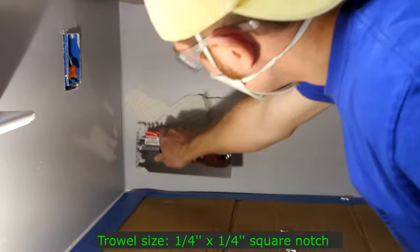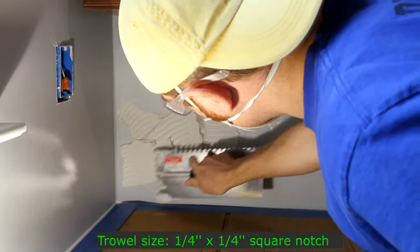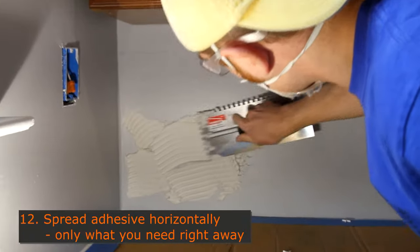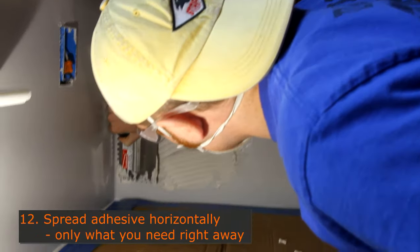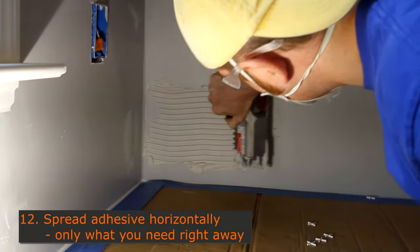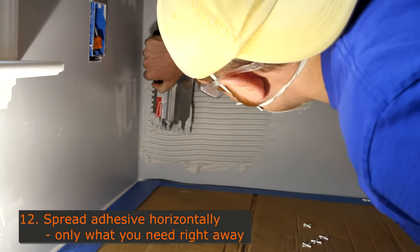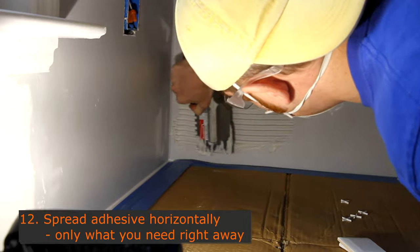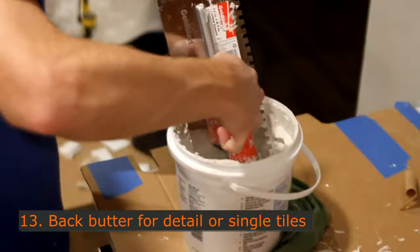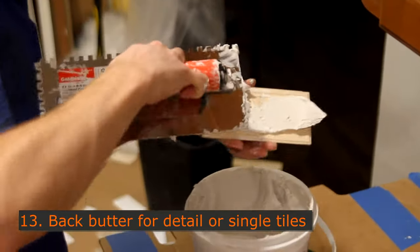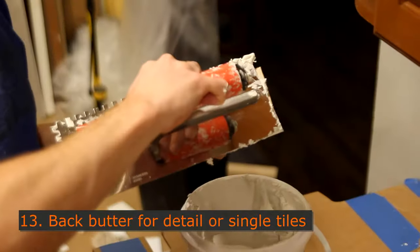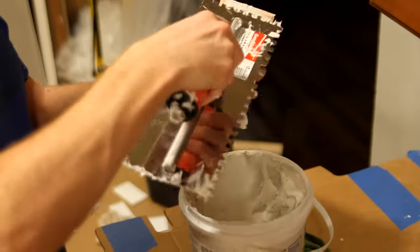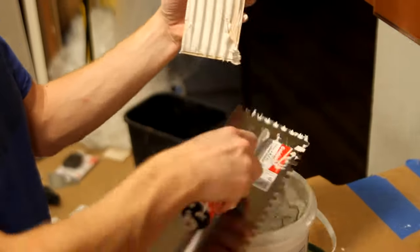We used this trowel with 1/4 inch depth and 1/4 inch wide grooves to apply our adhesive. I found the easiest way to cover a big area was to spread it on the wall and then scrape it in a horizontal manner and make sure not to apply any more than you can place tiles on immediately. Sometimes I'll use the back buttering method for the tiles when I'm going right around an outlet or if it's near the end of the day and I don't want to over apply adhesive by putting it directly on the wall.